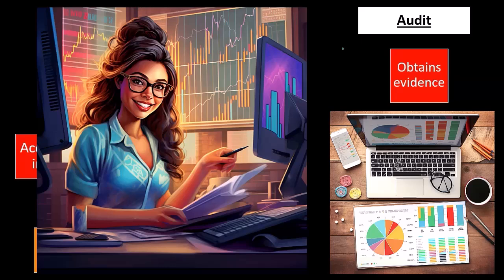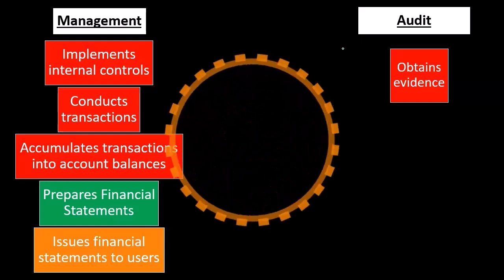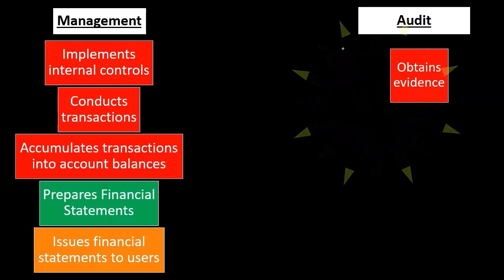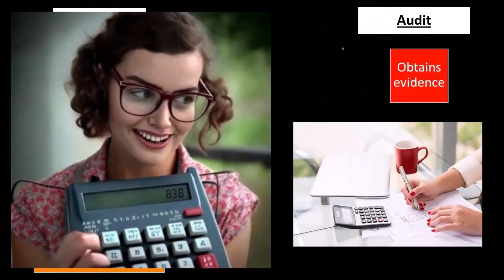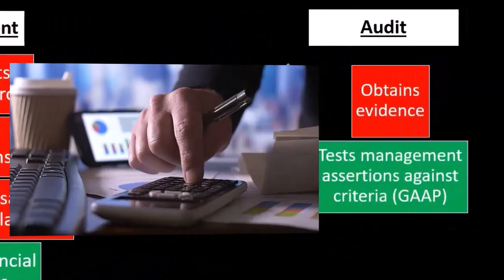Our goal is not to say whether this company is doing well or not. We do want to see if they're a going concern — are they going to go out of business — because that would violate some of the assumptions we typically make. But other than that, we're not making those type of value judgments. What we're trying to do is say, this is what happened — are you reflecting what happened in accordance with the set of rules you're claiming to follow, given the assertions that you've put them together in accordance with generally accepted accounting principles? We'll put together tests to see whether these items have indeed been put together in accordance with GAAP.